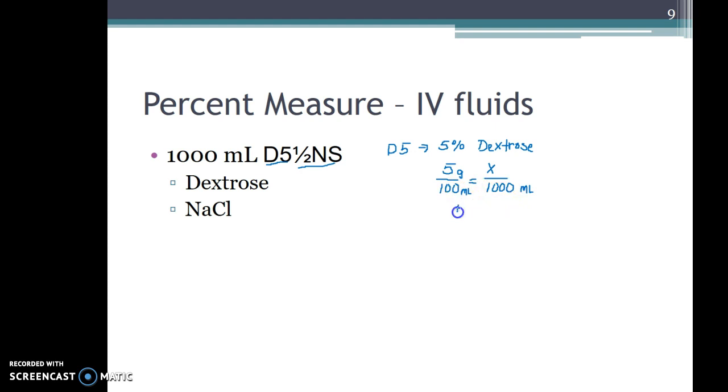So again solving with a cross product 100x is equal to 5000. Divide both sides by 100 and we get x is equal to 50 grams of the dextrose.